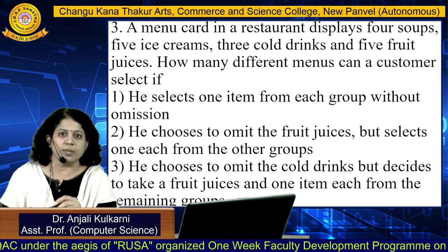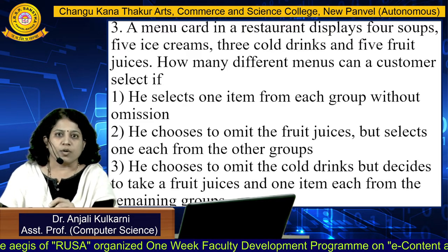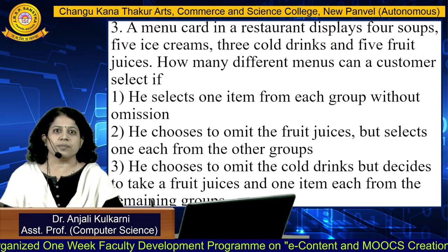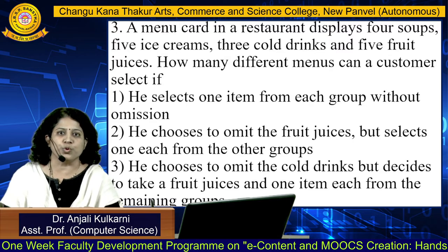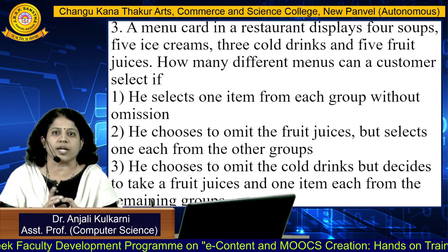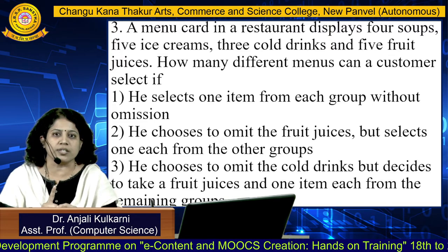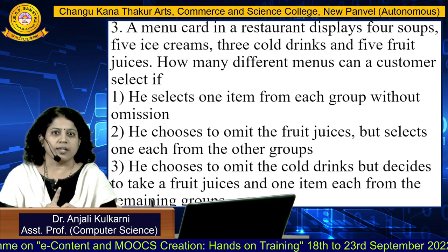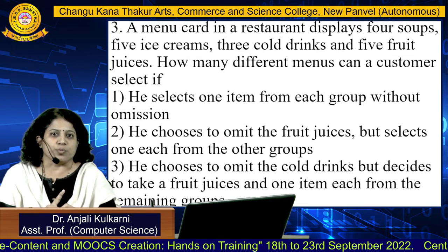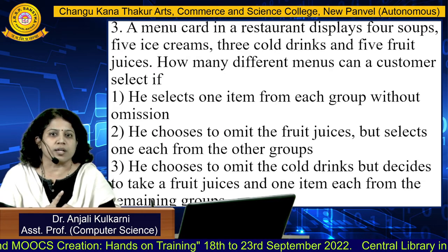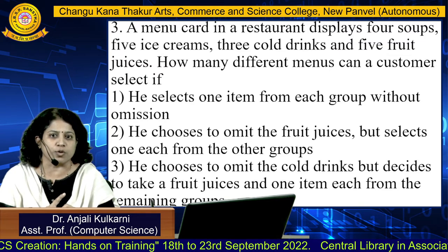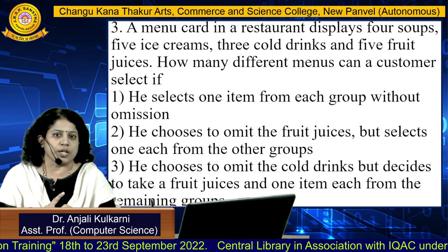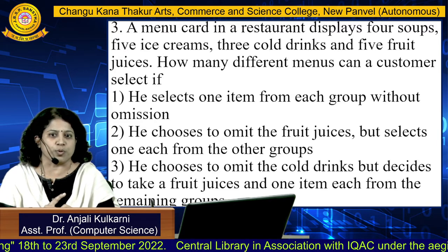Now the third problem. A menu card in a restaurant displays 4 soups, 5 ice creams, 3 cold drinks, and 5 fruit juices. How many different menus can a customer select? Condition 1: he selects 1 item from each group without omission. Condition 2: he omits fruit juices but selects 1 item each from the other groups. Condition 3: he omits cold drinks but selects fruit juices and 1 item each from the remaining groups.